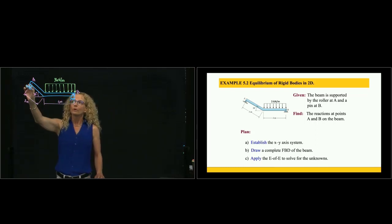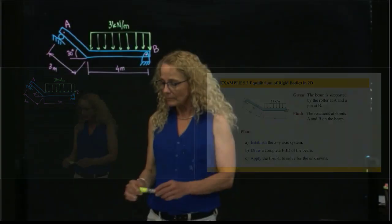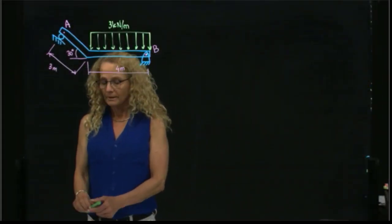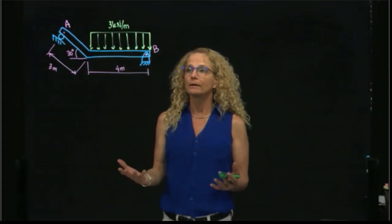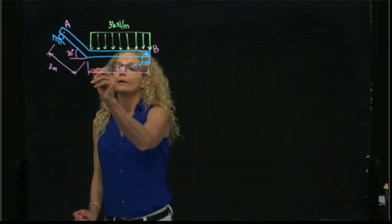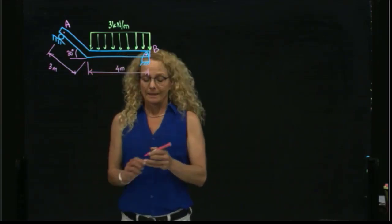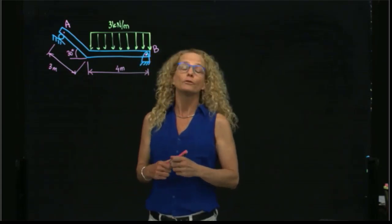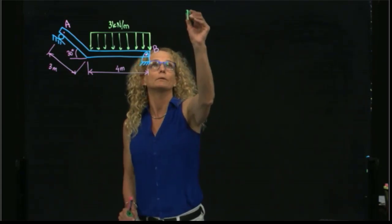This simple support only restricts motion in the direction perpendicular to the beam. It does not restrict any motion along the beam. When solving a rigid body or particle problem in equilibrium, the first thing we have to do is draw our free body diagram.